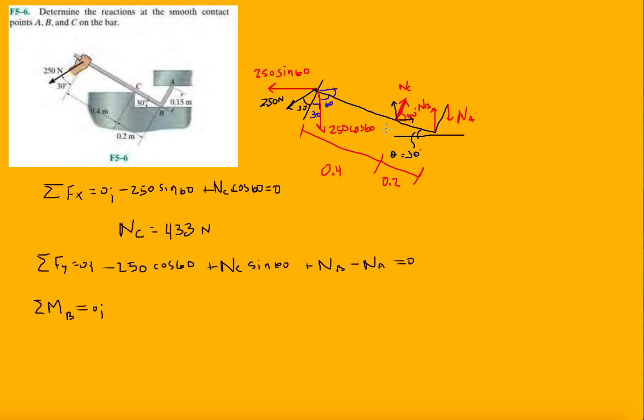So we're looking for perpendicular distances. N_C is normal to the bar, so we already have this perpendicular distance for N_C. So we're going to have N_C times 0.2, and it's going to rotate clockwise, so it's going to be negative.